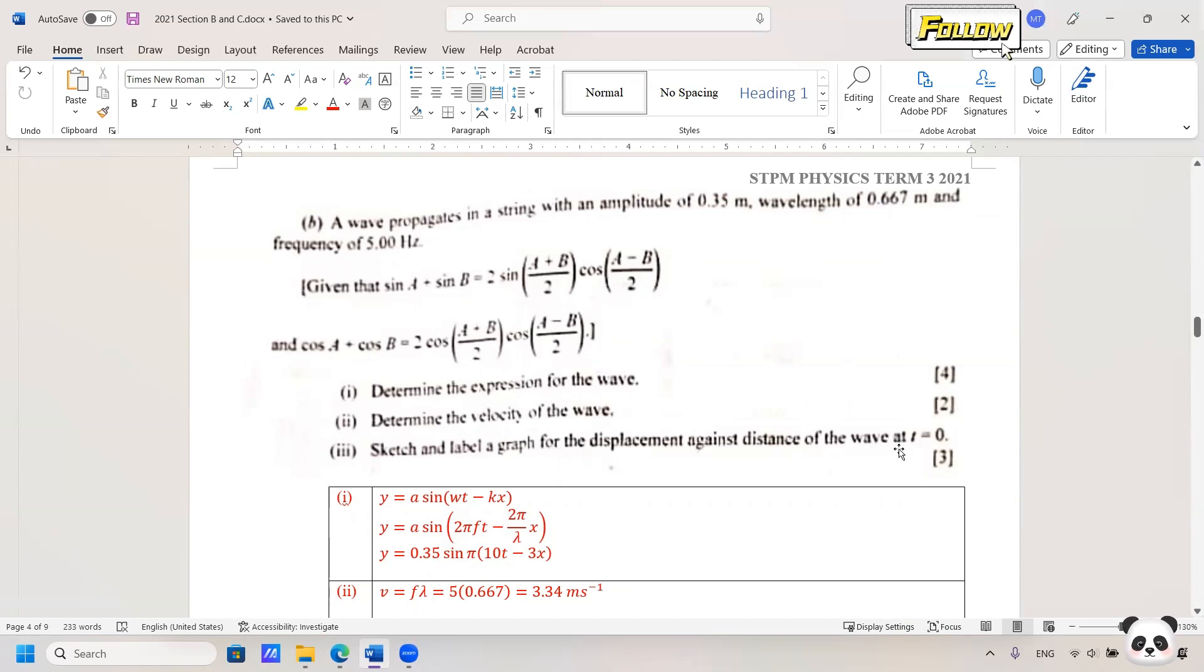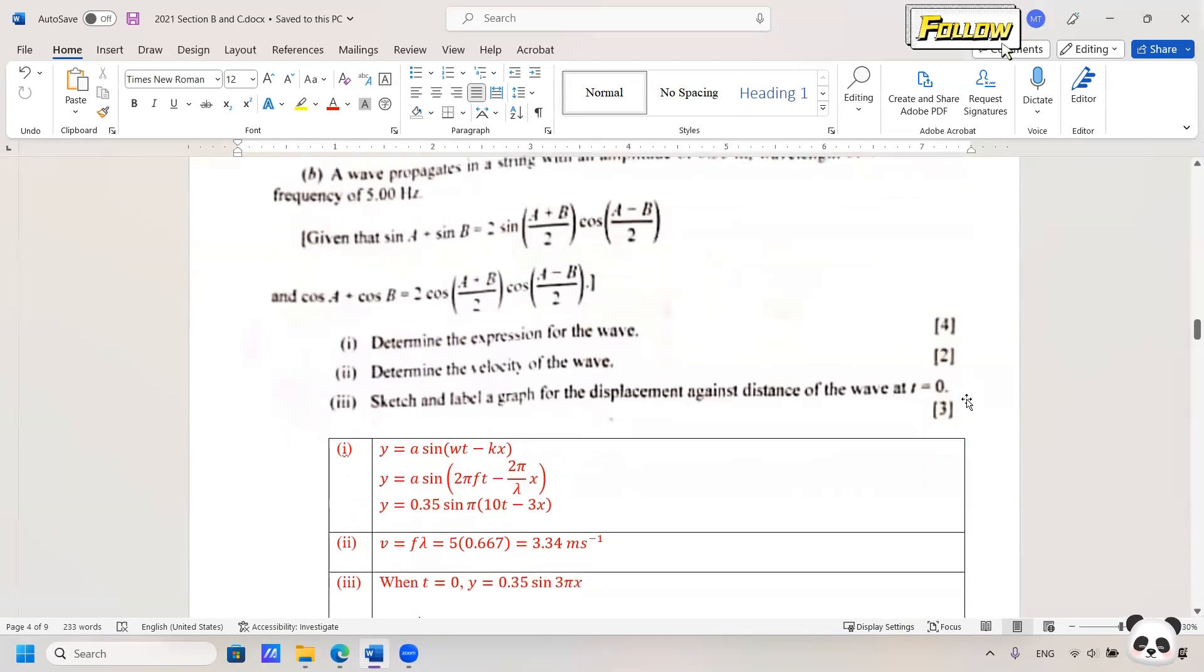First thing is we need to find out the equation when t equals 0. Put in the value into the general equation here and you should be able to see that the equation is 0.35 sin 3πx.